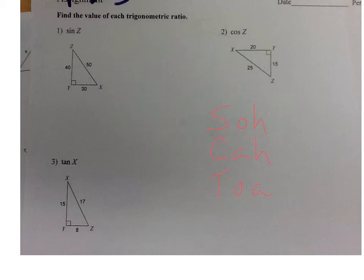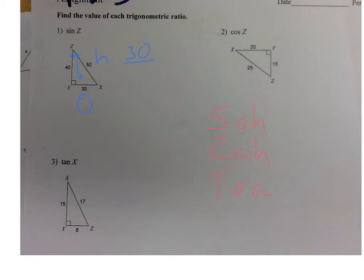This is a review using what we learned last week. Remember SOHCAHTOA: the sine ratio is the opposite side divided by the hypotenuse for whatever angle you're talking about. They're asking me to find the sine of angle Z. Here's angle Z, here's the hypotenuse because that's the longest side, and the opposite side is the one directly across from the angle. So the answer will be 30 over 50, which reduces to 3 over 5.